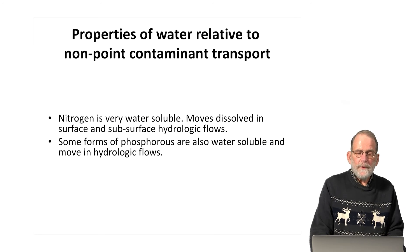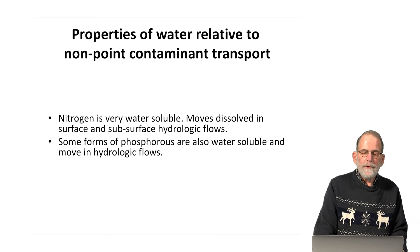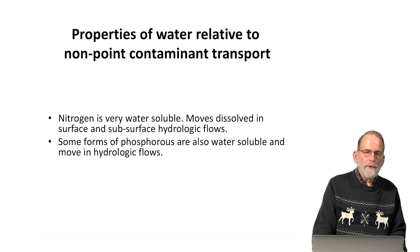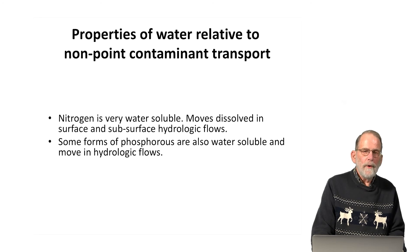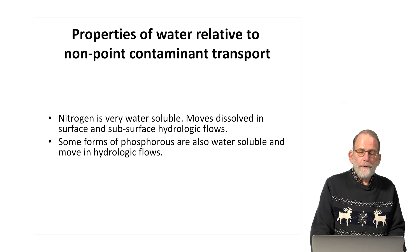Nitrogen, as it turns out, is very water-soluble. It moves dissolved in surface and subsurface hydrologic flows. So once nitrogen escapes from an upland source area, it can move across the surface of the land with overland flow, or it can join groundwater flow as it infiltrates into soil moisture and groundwater flows.